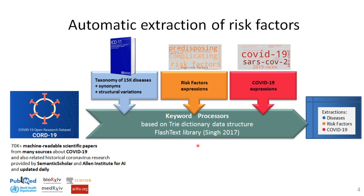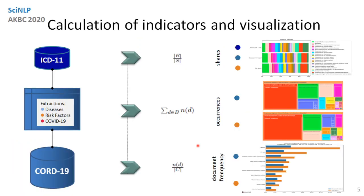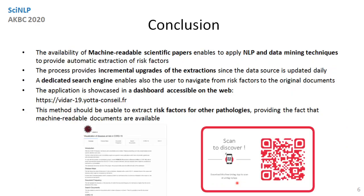The underlying technique relies on keyword processes implemented in the FlashText library. Then, using the annotated documents, we calculate several indicators and display them in convenient ways: shares, occurrences, and document frequency of diseases and risk factors.